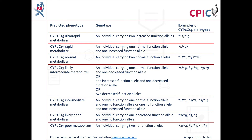This can include rare, increased function, reduced function, and non-functional alleles which are not routinely screened for in some genotyping tests. Further information about CYP2C19 alleles can also be found at the PharmVar website at www.pharmvar.org. A link to PharmVar is also given in the description below this video.